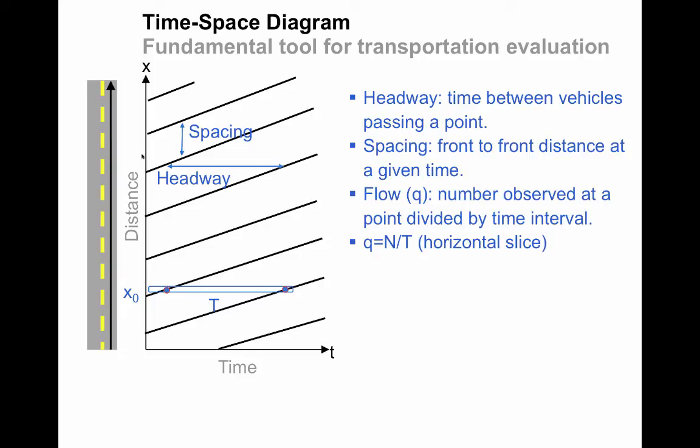Because this is a time-based measure, we can envision that we're standing by the side of the road at location x0, and for a particular time interval t, we observe two vehicles. The flow during that time interval is simply the number observed divided by the time interval. So flow is n divided by t. In this case, it would be two divided by t, and we express that in vehicles per hour. So for the time-based point-based measures, we cut a horizontal slice. That's the value of flow.